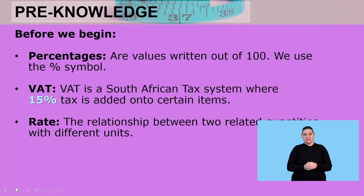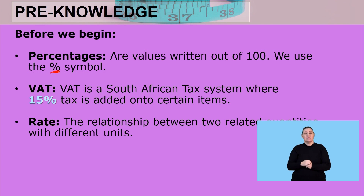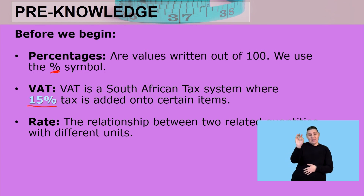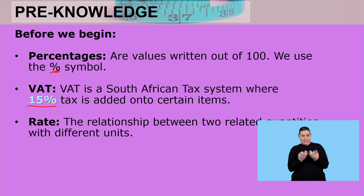Before we begin, percentages are values written out of 100 — we use the percentage symbol. Value added tax (VAT) is a South African tax system where 15% tax is added onto certain items. And rate is the relationship between two related quantities with different units.